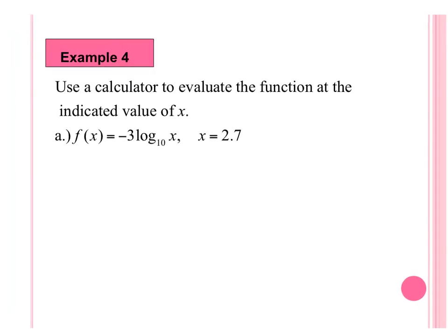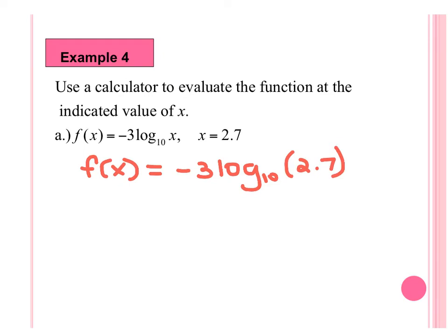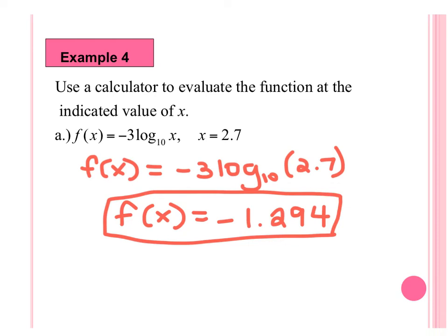Example 4 says use a calculator to evaluate the function at the indicated value of X. F of X equals negative 3 log base 10 of X, and X is 2.7. So F of X equals negative 3 log base 10 of 2.7. You can type that whole thing into your calculator — negative 3 log of 2.7 — and you should get F of X equals negative 1.294.